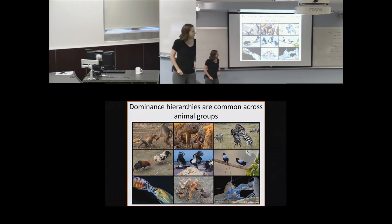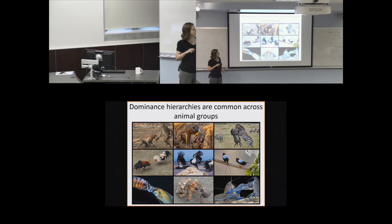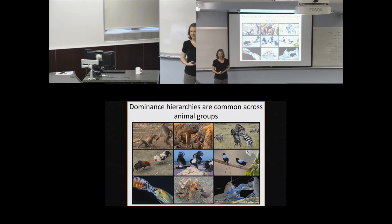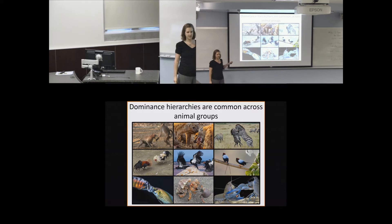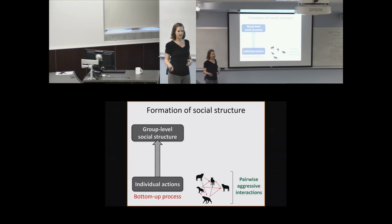One of the really common types of social structure emerging in social groups across the animal kingdom is dominance hierarchies. Dominance hierarchies form through aggressive interactions among individuals, allowing individuals to establish a rank within the hierarchy at the group level. We see dominance hierarchies in very diverse taxa—primates, social carnivores, herbivores, several bird species, and even fish and crustaceans. The presence of dominance hierarchy structure is really widespread across many different taxa, despite what we'd expect to be wide variation in the underlying cognitive skills of these species.